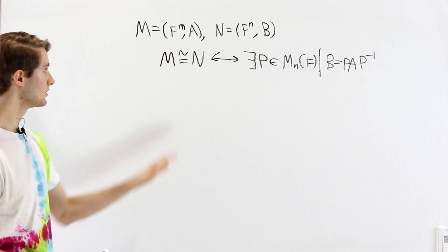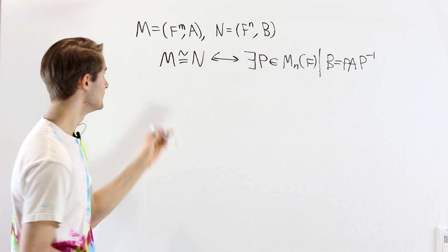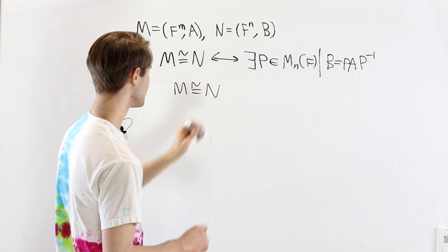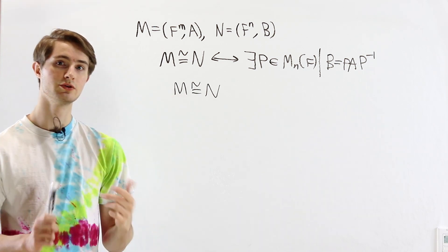Now in order to do this, we're going to start with a statement over here. Suppose that M is isomorphic to N. What does that tell us about these two modules? Well first of all...